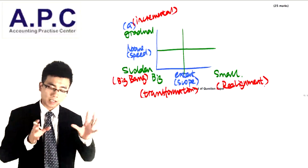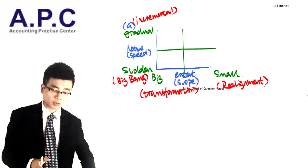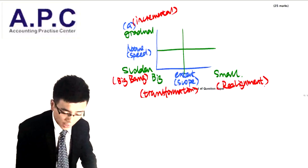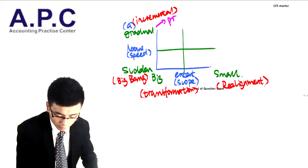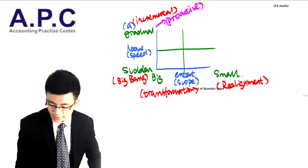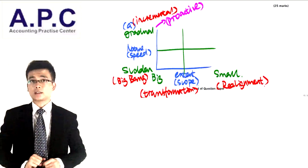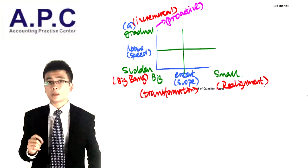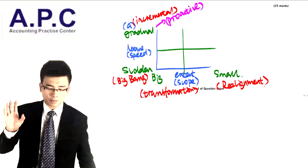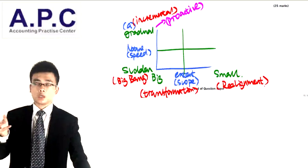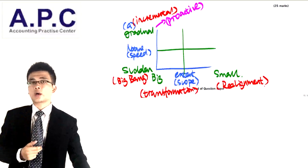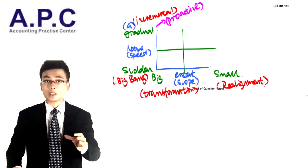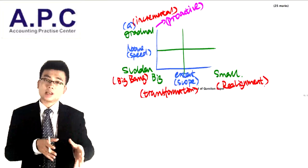Looking at the speed of the change — which is the nature of the change — the gradual change is proactive. Proactive means it is the company's decision to try to change something. They change existing methods within the business, improve business processes, improve marketing, and improve how they retain customers. So this is the proactive change, which means it's the gradual change.